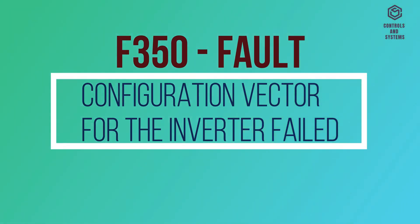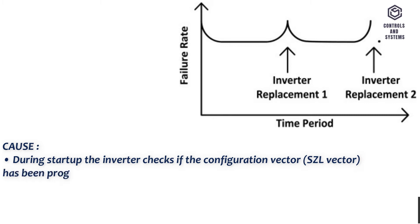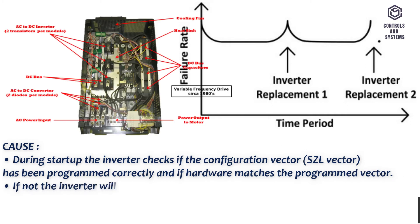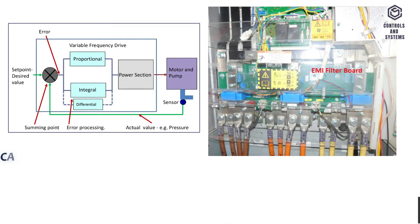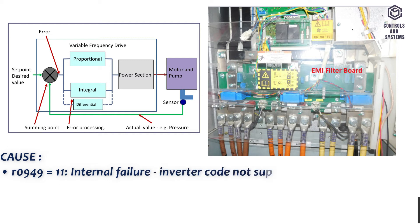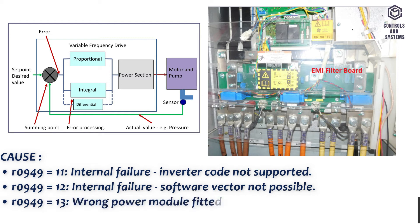F350 Fault: configuration vector for the inverter failed. Cause: during startup the inverter checks if the configuration vector (FZL vector) has been programmed correctly and if hardware matches the programmed vector; if not, the inverter will trip. R0949=1: internal failure, no hardware configuration vector available. R0949=2: internal failure, no software configuration vector available. R0949=11: internal failure, inverter code not supported. R0949=13: wrong power module fitted.